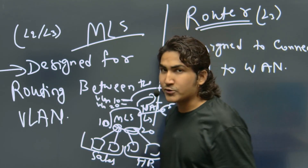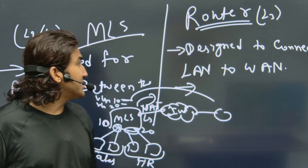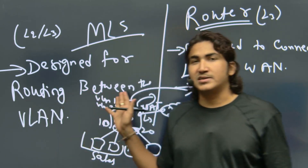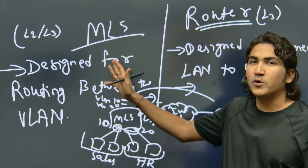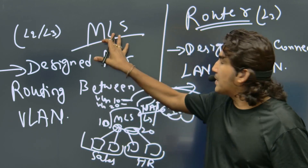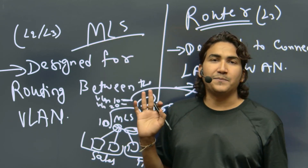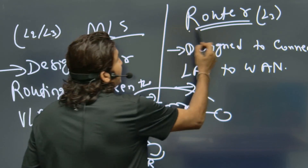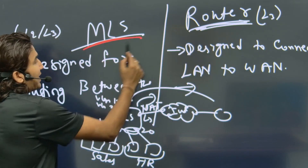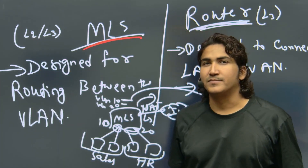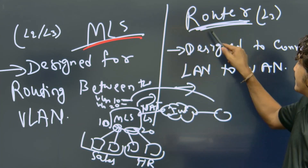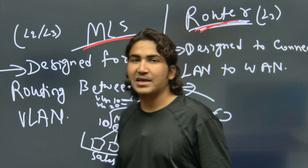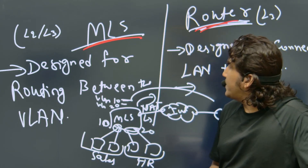Router is designed for static and dynamic routing, for advanced routing. MLS is designed for basic routing and only supports L3 forwarding. In terms of speed and performance, router provides better performance than MLS switch for WAN tasks. If you are using NAT and VPN, router will definitely give better speed than MLS.